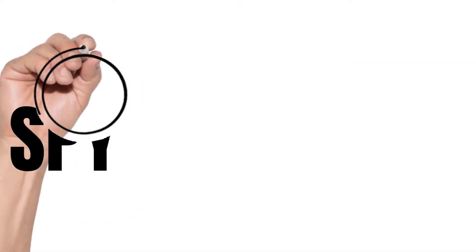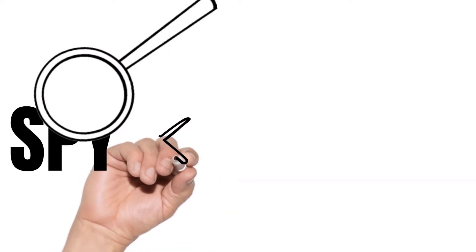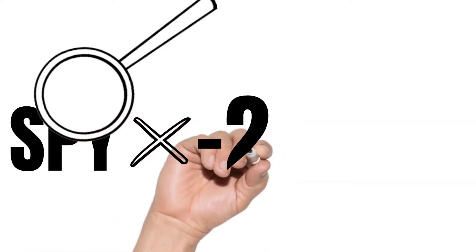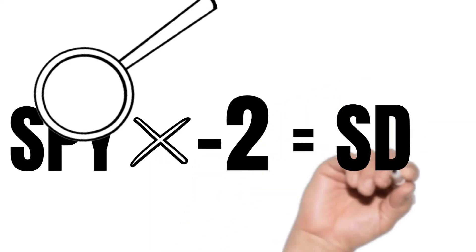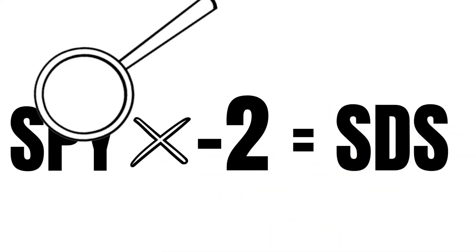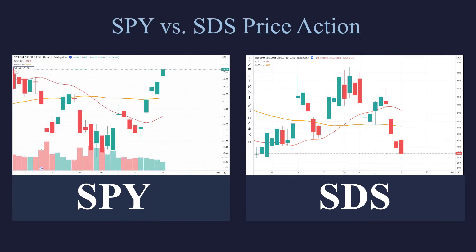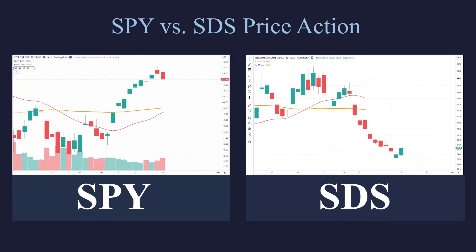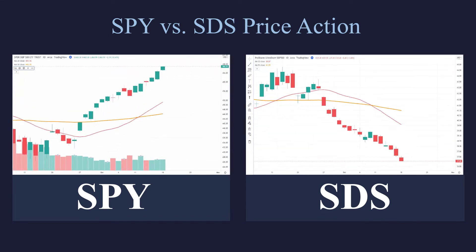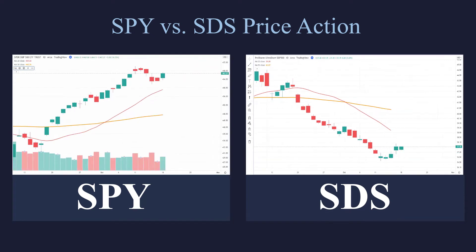Here we have the SPY — the ETF that tracks the performance of the S&P 500. Whatever those 500 stocks do as a whole, the SPY is going to move along with it. However, if a trader wants to magnify and inverse the SPY, they do the magnifier times negative two, and that gets you to the ticker symbol SDS. This symbol gives you the inverse return times two of the SPY. Looking at them side by side — SPY on the left, SDS on the right — they simply move opposite of each other. When one is going down, the other's going up, and vice versa.